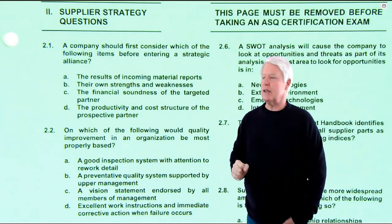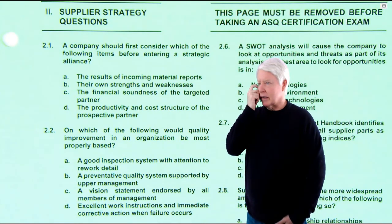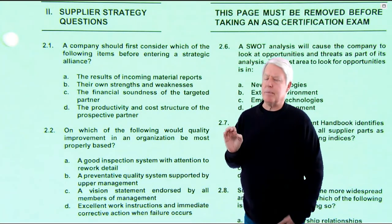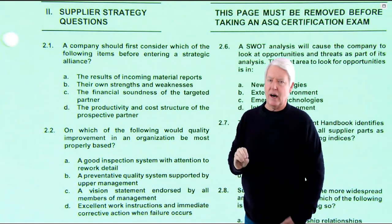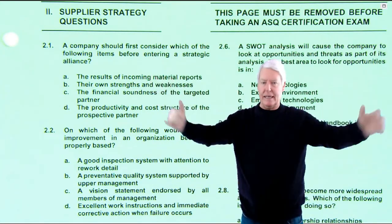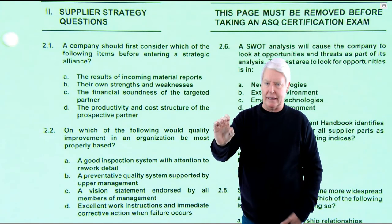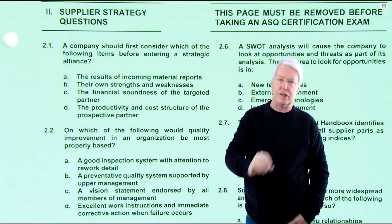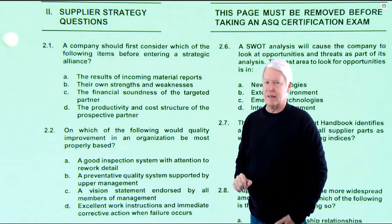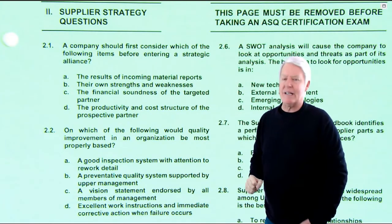Question 2.1: A company should first consider which of the following items before entering a strategic alliance. Let me break this up for you — there's strategic, tactical, and operational. Strategic is big-picture, sky-high, dreaming, general stuff. The CEO has the vision. The tactical team creates a plan to make that vision a reality. Operational is implementing the plan to help reach the strategic vision. Before entering a strategic alliance, what do you need to do first?